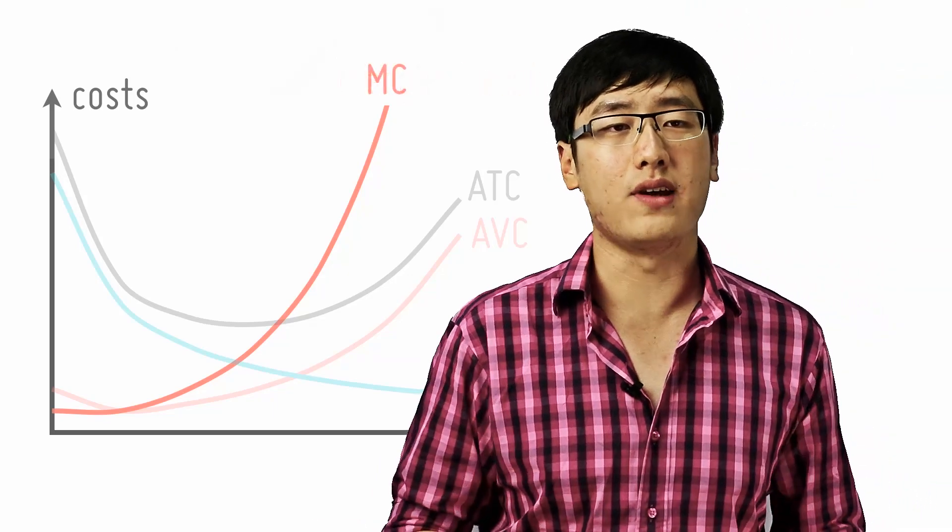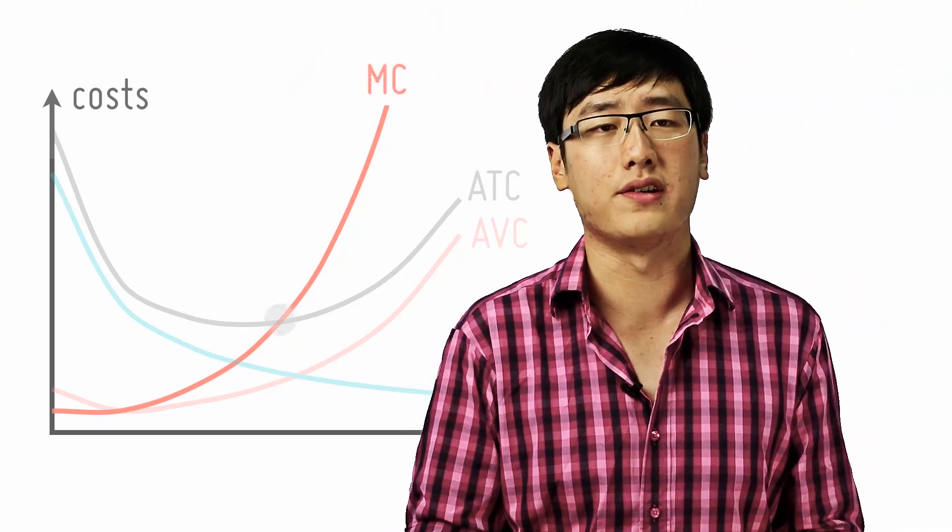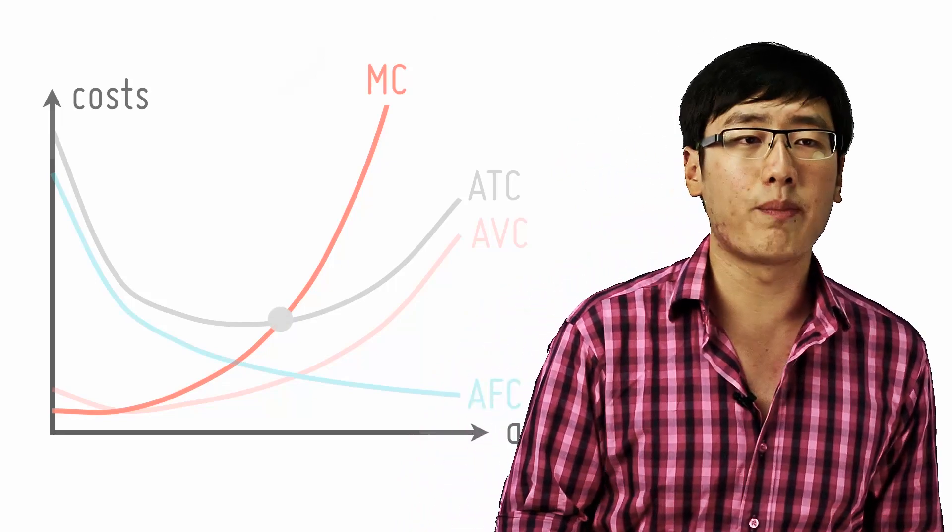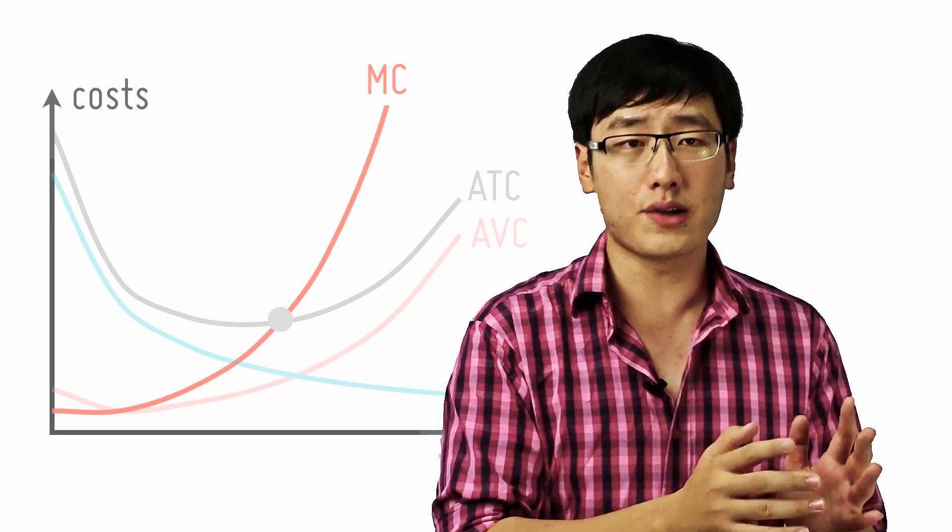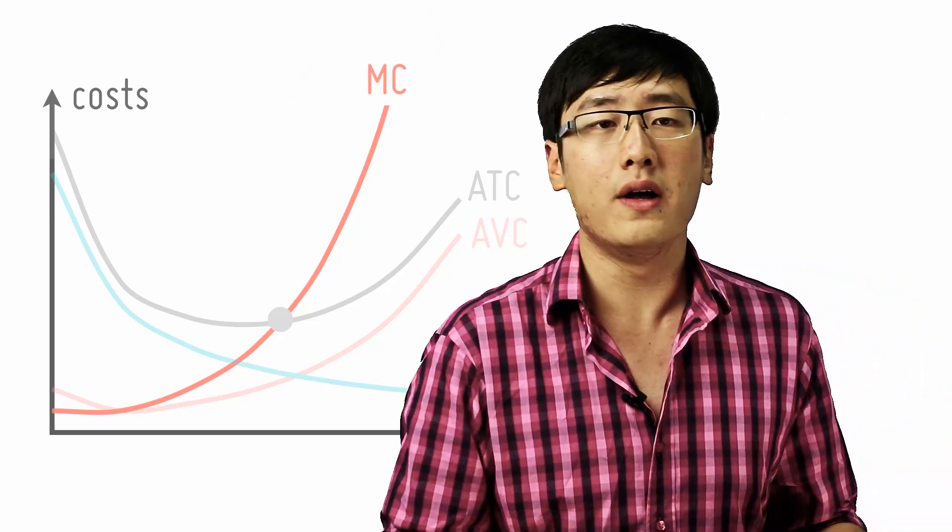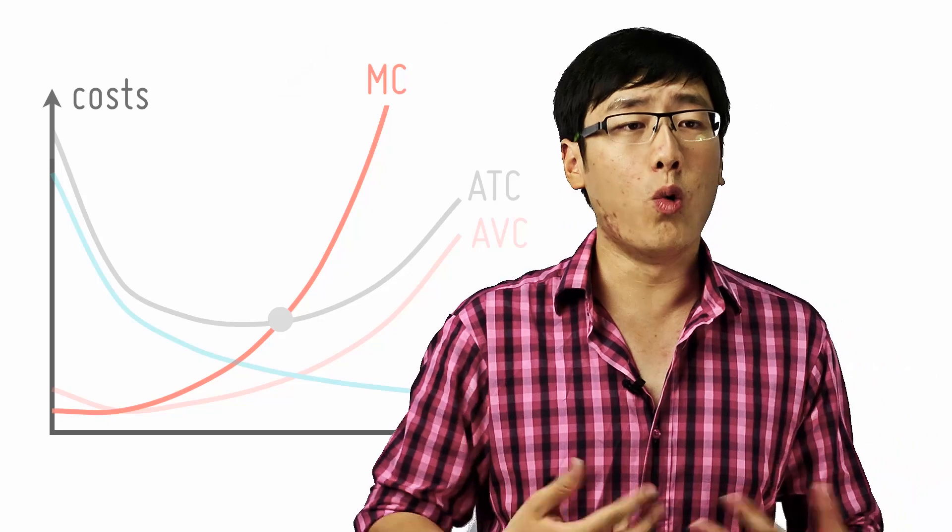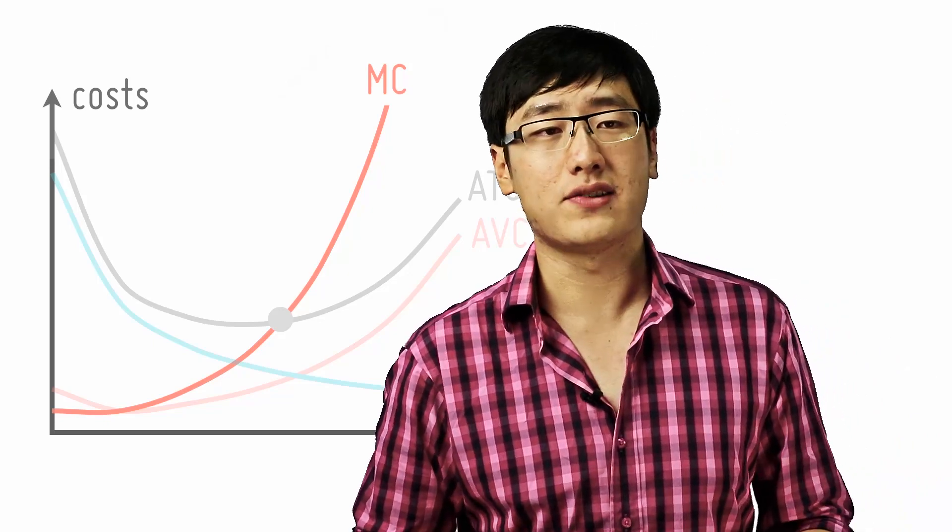Your teacher will tell you that the MC always cuts the AC at the bottom point. Why? Now remember the checkpoint we had about average and marginals? So here we go. When the marginal cost, the cost of an additional unit is below the average, the average always decreases.